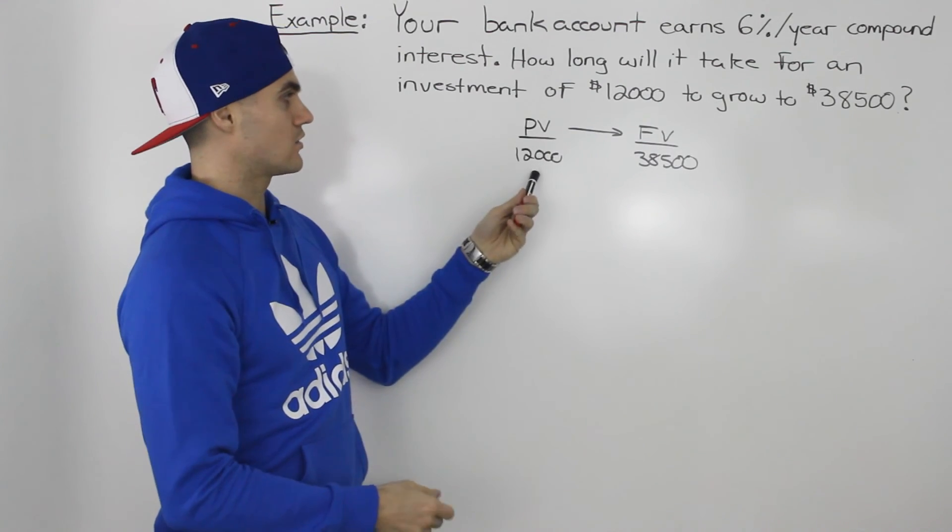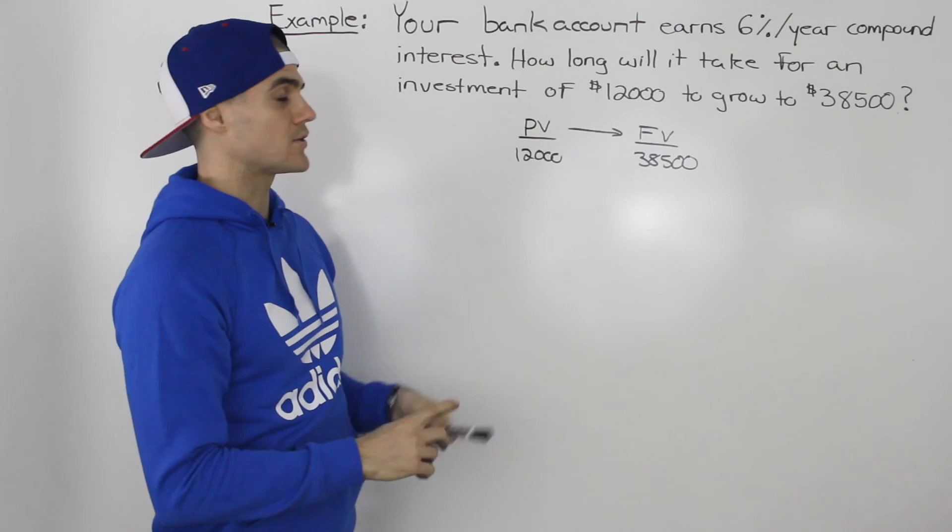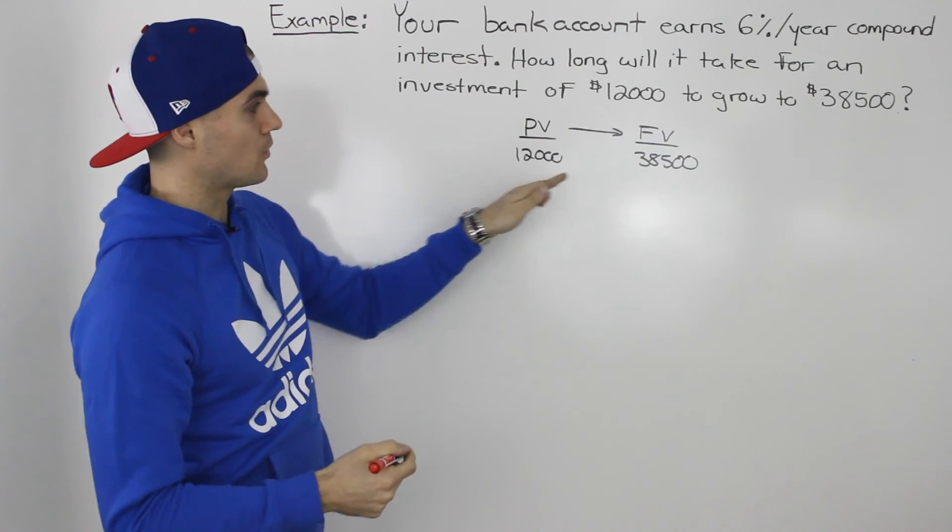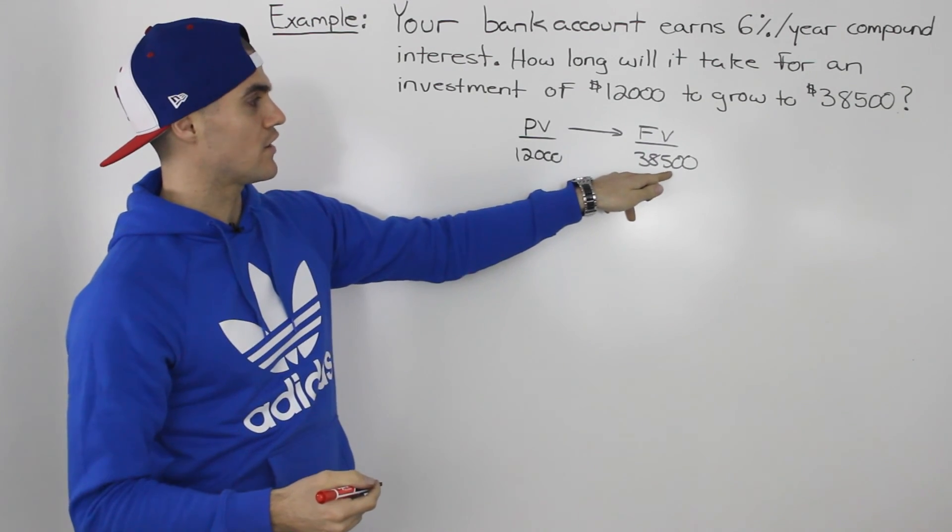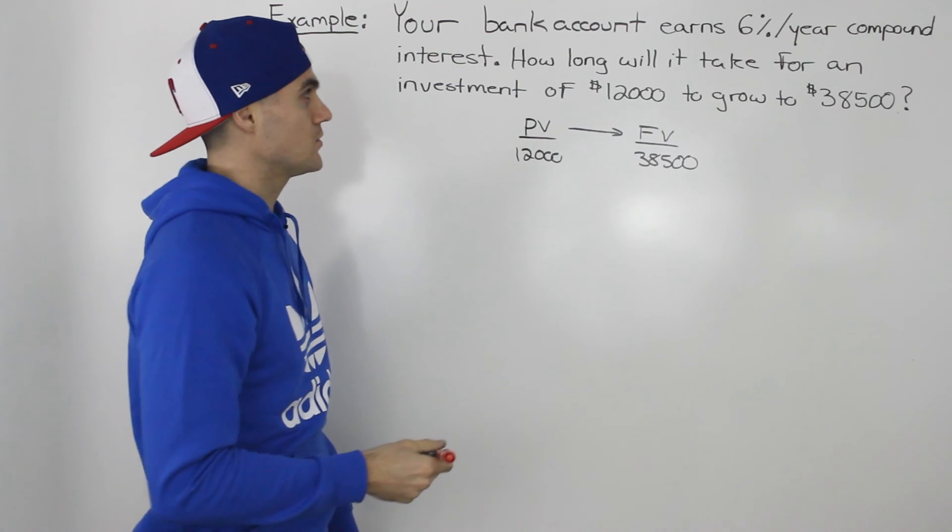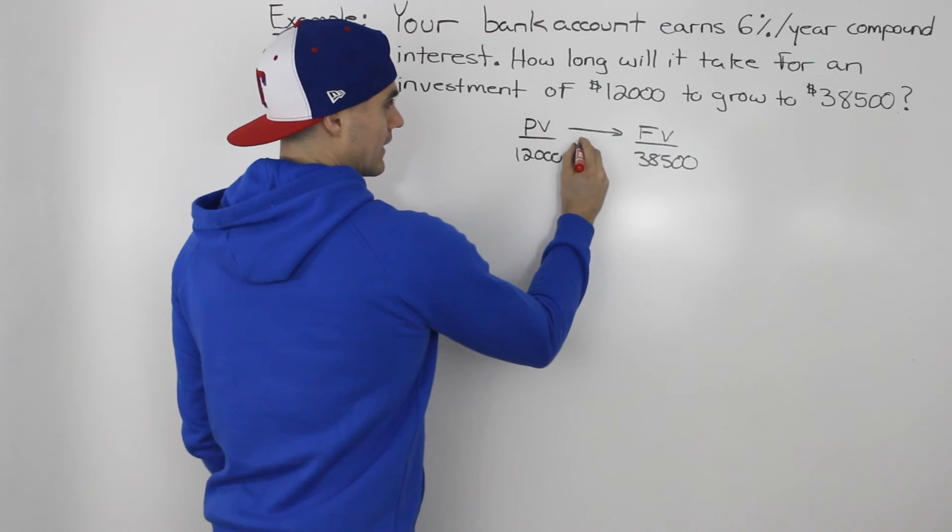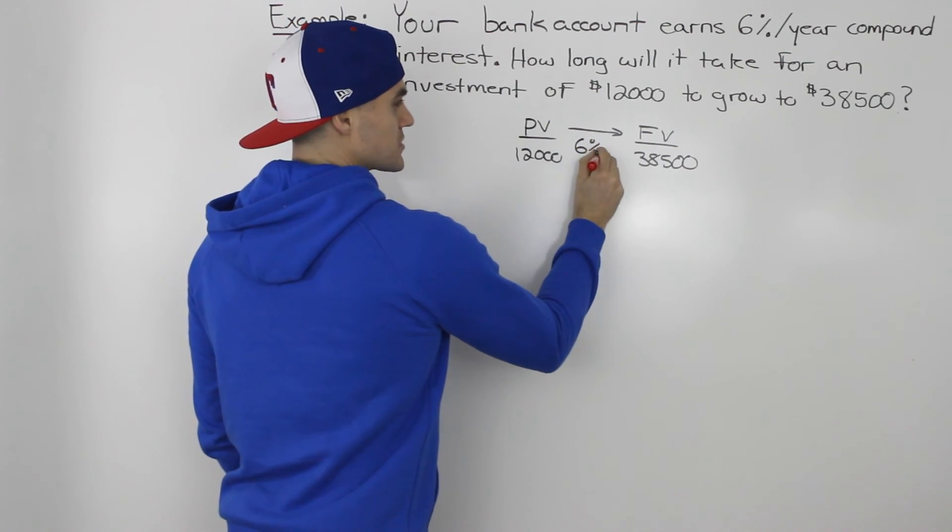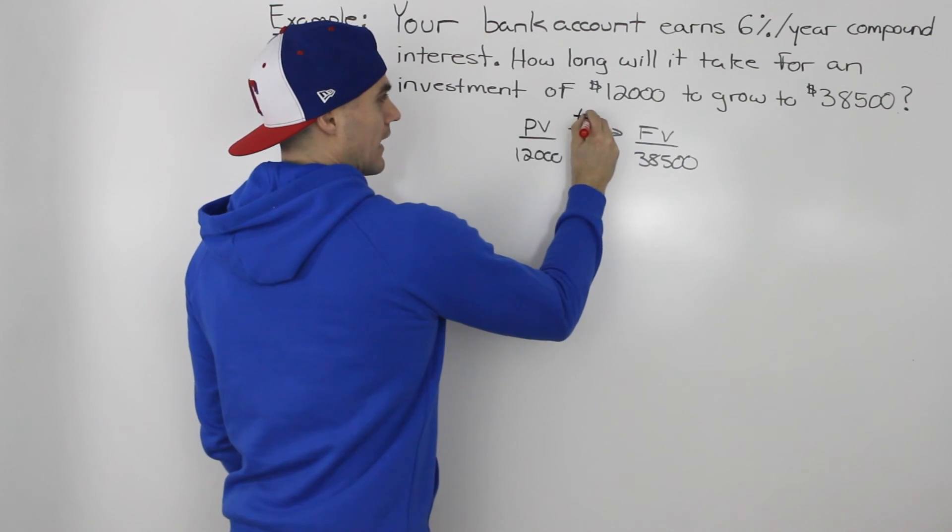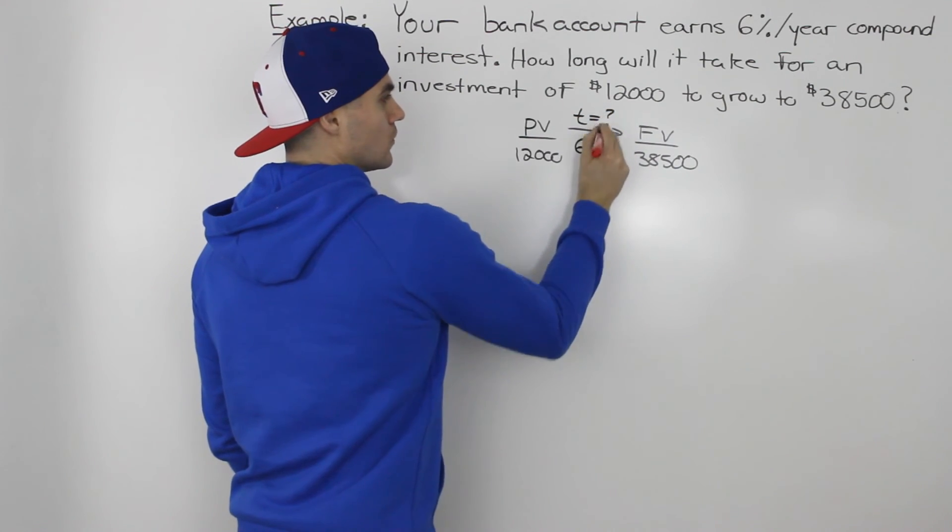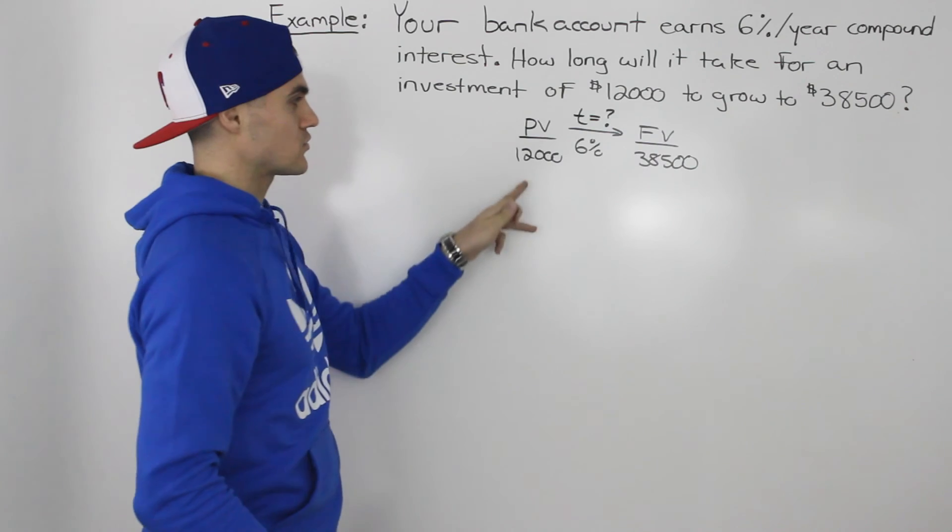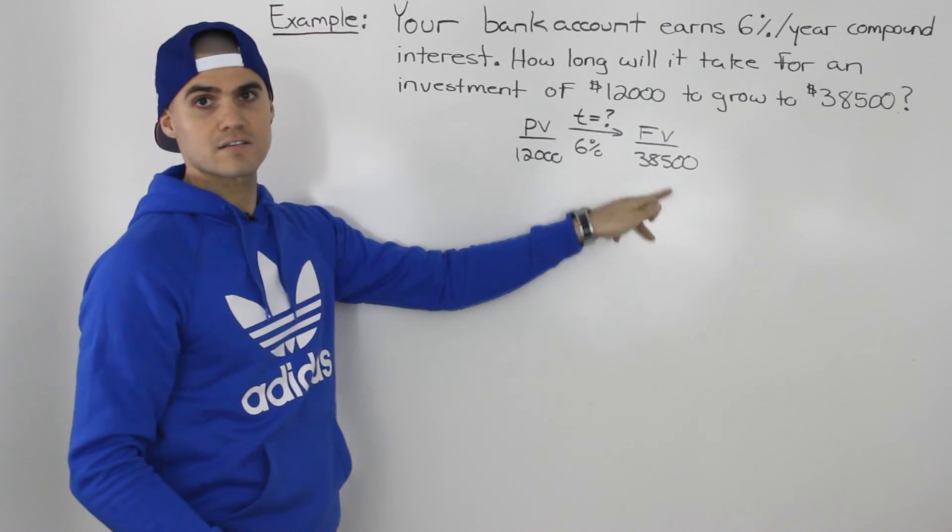So we're going to take $12,000 now, which is our present value, and we're going to grow it to $38,500, which is our future value. And our bank account earns 6% interest, and they're asking us how long will it take for that $12,000 to grow to $38,500?